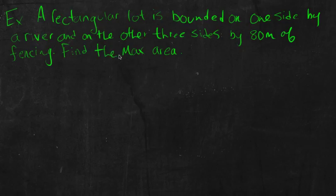So I wrote this one out, so it'll save us a bit of time. So it says a rectangular lot is bounded on one side by a river, and on the other three sides by 80 meters of fencing. So it says find the max area. So the first thing I always tell my students to do in a situation like this is draw a picture. So you've got a river over here somewhere, and there's a rectangular lot.